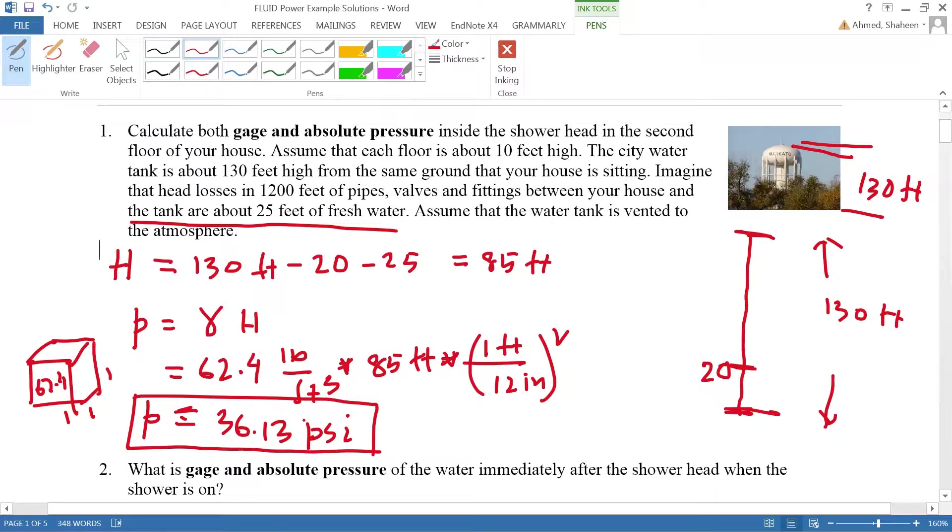That's the gauge pressure answer. The problem asks for both gauge and absolute pressure. This 36.13 PSI is gauge pressure - we didn't account for atmospheric air. Absolute pressure equals gauge pressure plus atmospheric pressure. If you add them, that's 51.53 PSI.